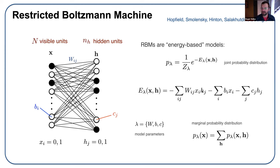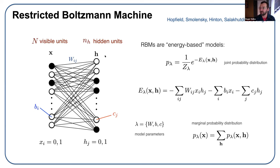An RBM has what I call visible units — each is a binary variable, just an Ising spin — which take the input of projective measurements of qubits or pixel values of images. These are connected to another set of Ising spins called the hidden layer by weights, which are really just the Ising couplings. We define an energy: X is visible, H is hidden, and there's an interaction matrix plus magnetic fields called biases. The number of hidden units can be changed to give more representational power or expressivity.